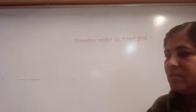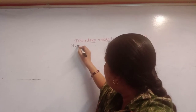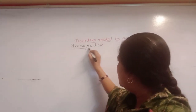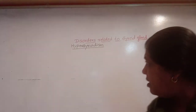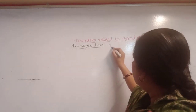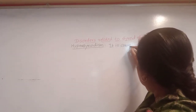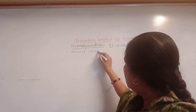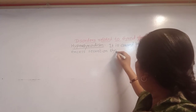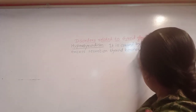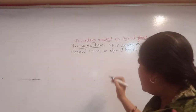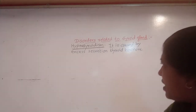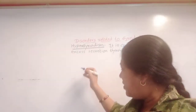Disorders related to the thyroid gland: hyperthyroidism. Hyperthyroidism is caused by excess secretion of thyroid hormone — that is, excess secretion of thyroxine is called hyperthyroidism. Now let's look at the symptoms of hyperthyroidism.